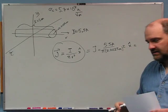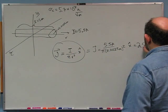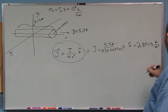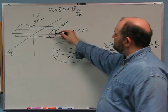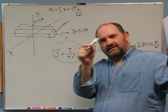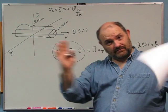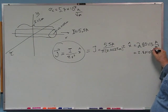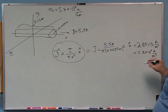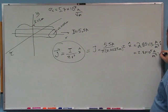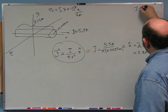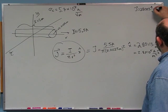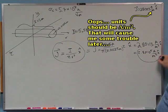I can stick that into a calculator. The result is 280,113 amps per meter squared, which are the units of current density. This is a dinky little wire, and a square meter is a big thing. To get 5.5 amps in a little tiny fraction of a square meter, you need a big number. To the right number of sig figs, that is 2.8 times 10 to the 5th amps per square meter x-hat. So that's the current density — the answer to part A.